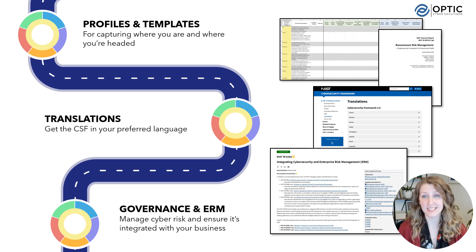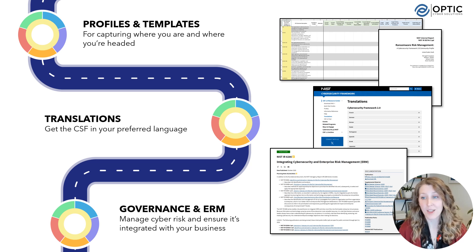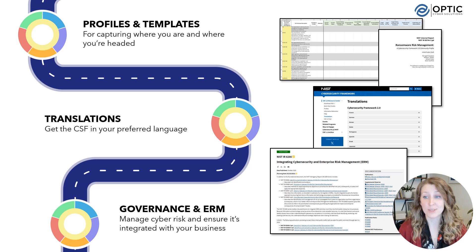One of the biggest updates in CSF 2.0 is its stronger focus on cybersecurity governance. The framework highlights how cybersecurity should directly support an organization's broader mission and objectives through enterprise risk management, or ERM. This shift helps ensure that cybersecurity isn't just an IT issue, but a key part of overall business risk management. To support this, NIST has recently been updating its IR 8286 series, which provides guidance on integrating cybersecurity into ERM processes. These publications help organizations align their cybersecurity strategies with business objectives, making risk-based decisions that support long-term success. Three of these guides — covering cybersecurity integration, risk estimation, and governance oversight — were released last week and are currently open for public comment. So if you're looking to strengthen the connection between cybersecurity and enterprise risk management, these resources are definitely worth checking out.